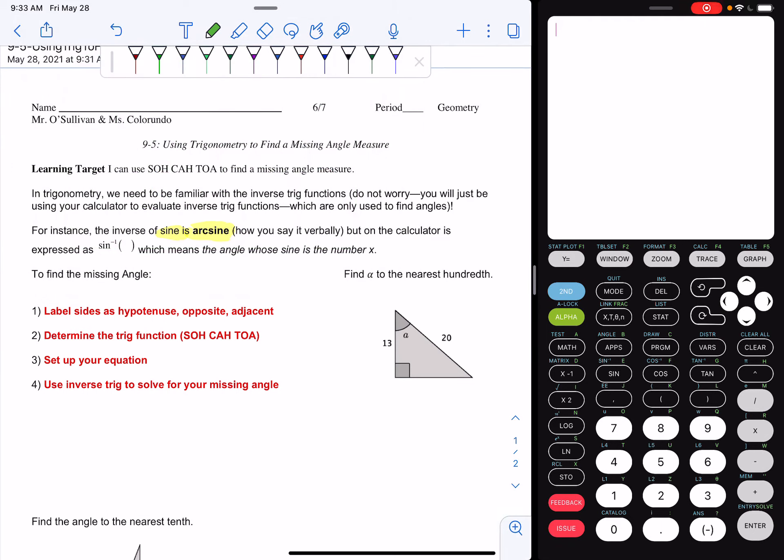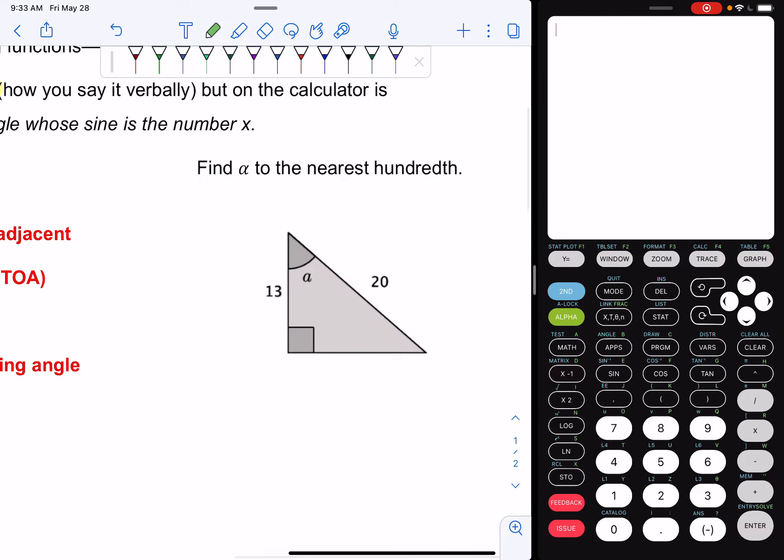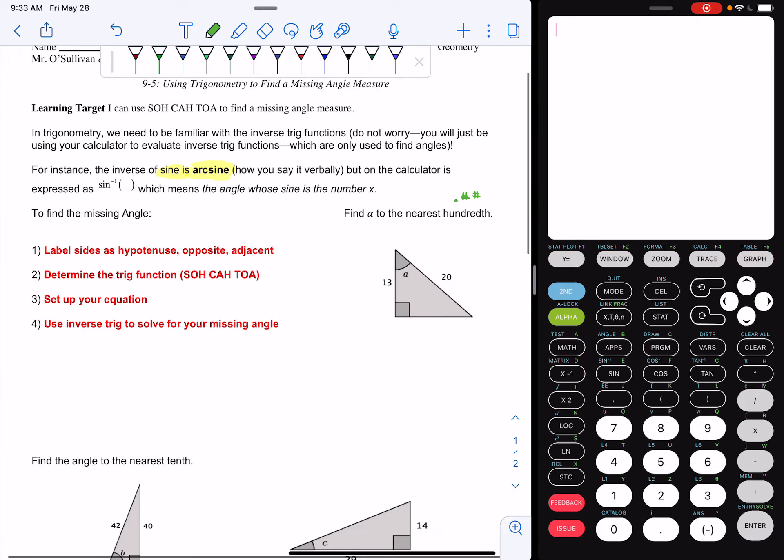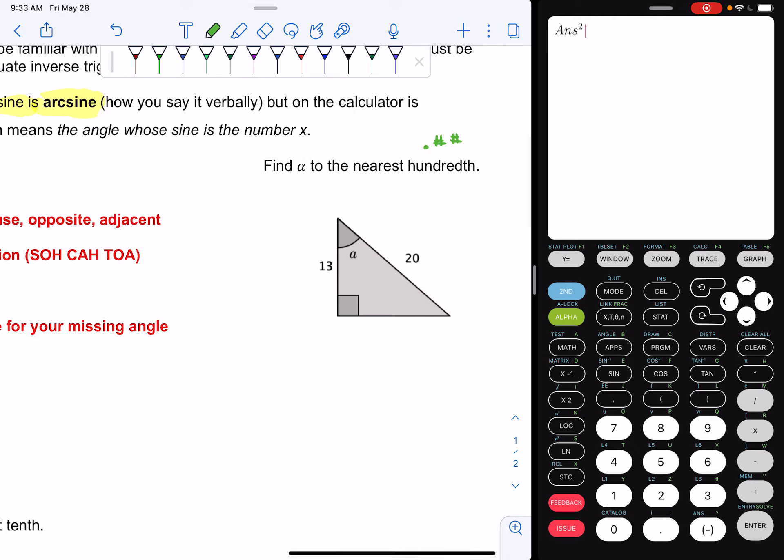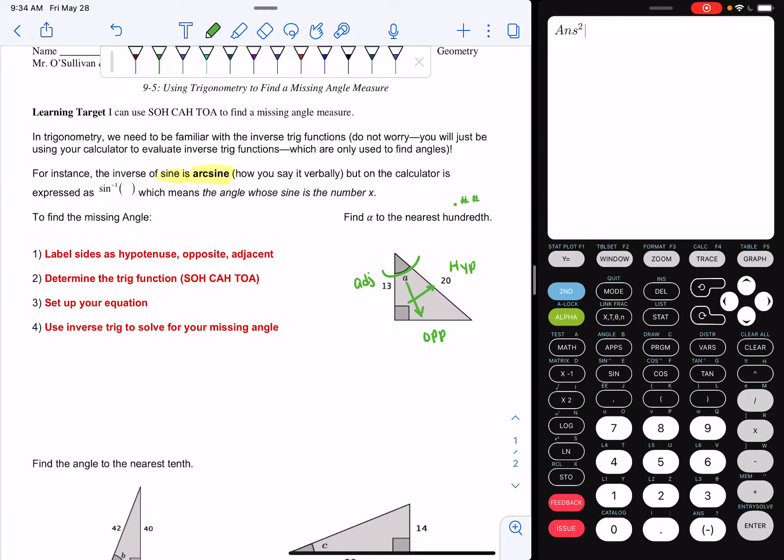So if I look at this image, I want to find alpha to the nearest hundredth. So this is another Greek letter similar to theta. It just stands for an angle. And to the nearest hundredth is two decimal places. So step one says label your sides. So hypotenuse, opposite, and adjacent. If you look at our reference angles right here, this is what we want to find. This is our hypotenuse. This is our opposite. And this is our adjacent. So we have our sides labeled.